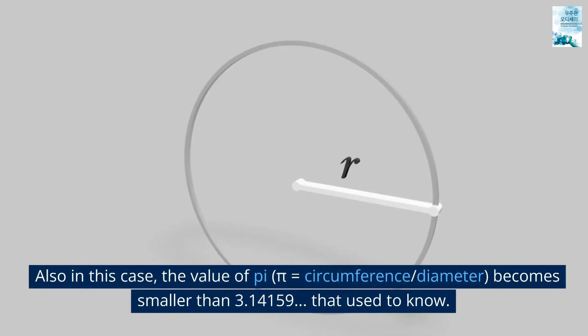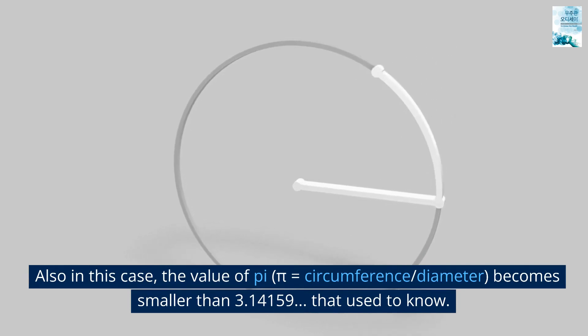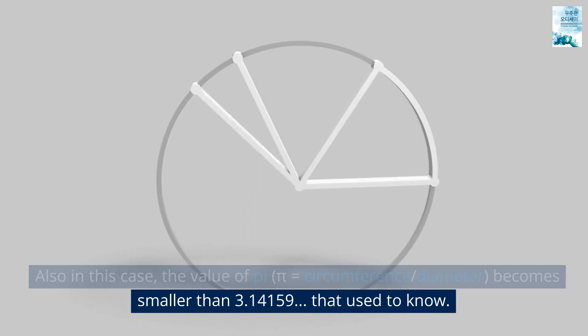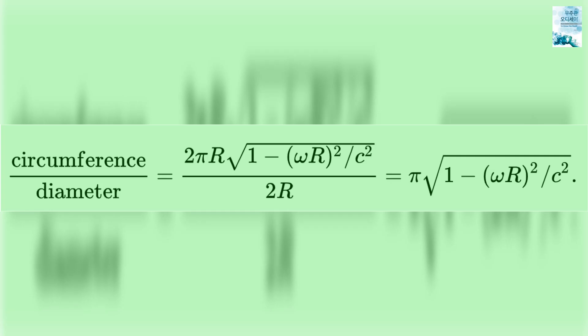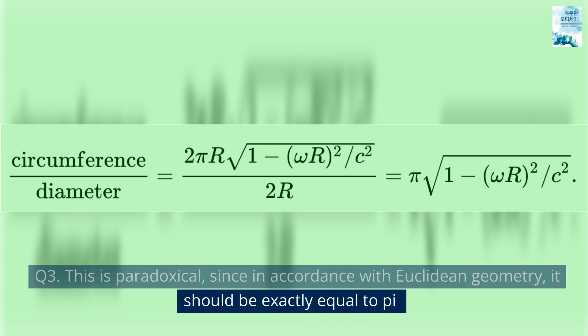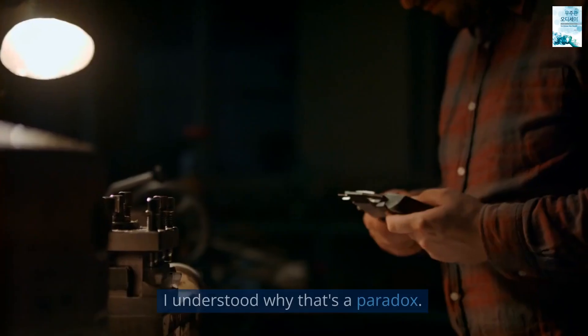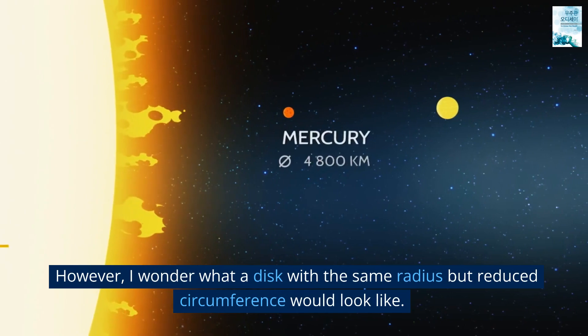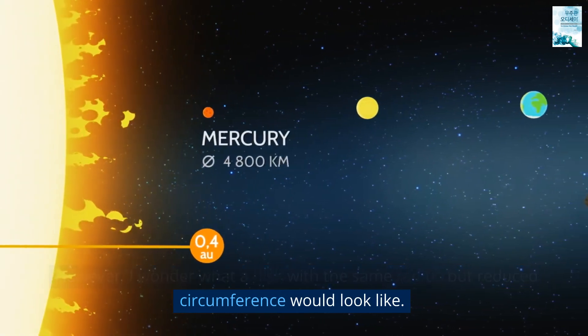So it's a paradox. Also in this case, the value of pi — pi equals circumference over diameter — becomes smaller than 3.14159 that we used to know. This is paradoxical, since in accordance with Euclidean geometry, it should be exactly equal to pi. I understood why that's a paradox. However, I wonder what a disc with the same radius but reduced circumference would look like. I can't imagine.